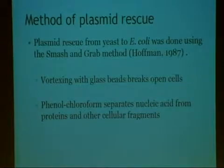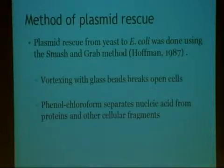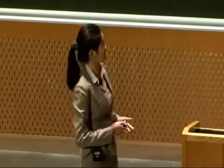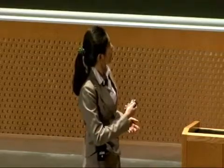Before sequencing, we had to get that gene of interest out. We used a method called smash-and-grab, developed by my mentor some time ago. The basic idea is like smashing open the glass windows of a bank and letting the money inside roll out — we vortexed the cell with glass beads to break open the cell membrane, and then the cellular matter would come out. We used phenol-chloroform to separate the nucleic acid from other biological matter. After getting our purified DNA, we sent it for sequencing.